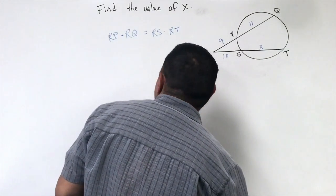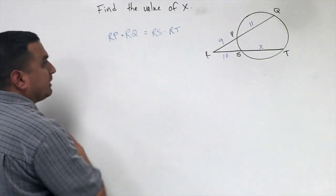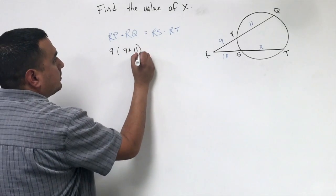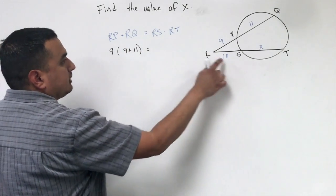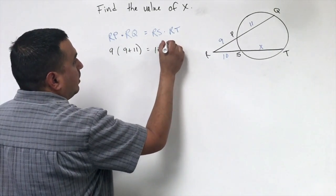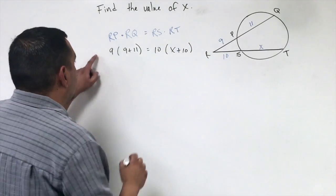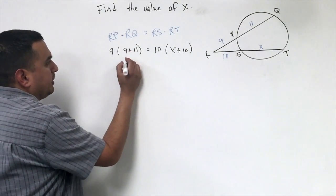So let's substitute this in. So I know RP is 9. RQ is going to be 9 plus 11. And then RS is 10. RT, though, is going to be X plus 10. Okay, so these two I'm going to add.